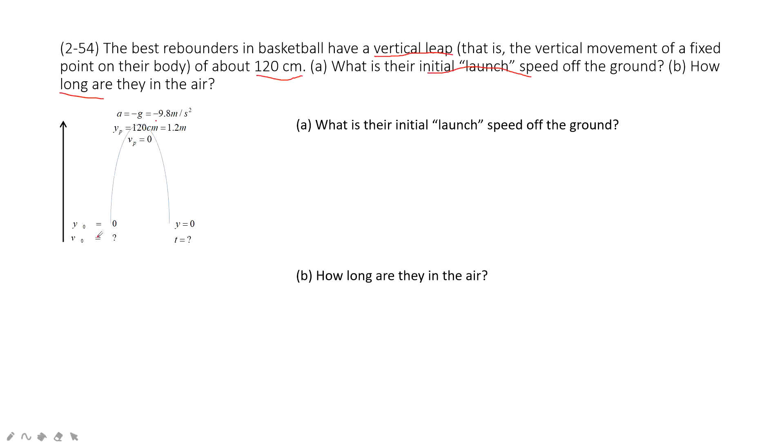And the unknowns are initial velocity and time taken. And then we choose this one as reference point. So initial position is zero, final position is zero.